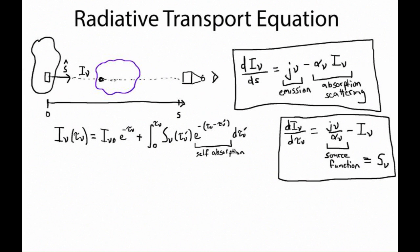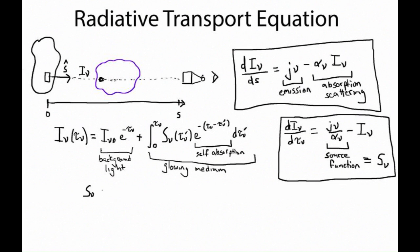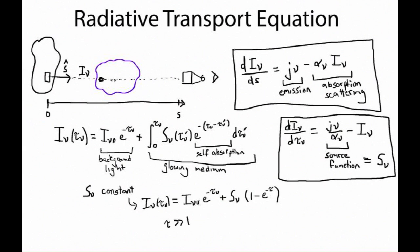The radiative transport equation breaks down into a term accounting for background light and a term accounting for emission from the glowing medium. If we assume the source function is constant — meaning emission and absorption don't change as a function of optical depth — the equation simplifies to: intensity equals background light attenuated by optical depth plus emission phased in inversely with optical depth. For the optically thick case, the intensity forgets about the background light and asymptotes to the source function. For the optically thin case, specific intensity is approximately the background emission plus a source term that goes linearly with optical depth.